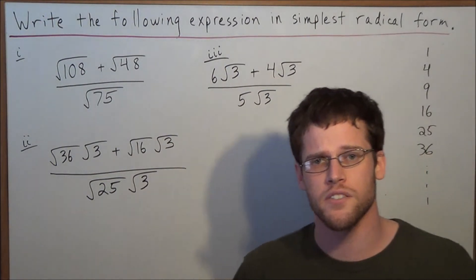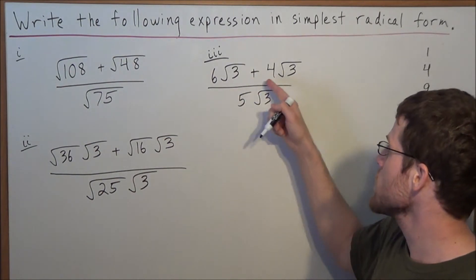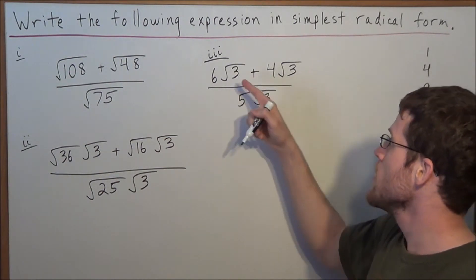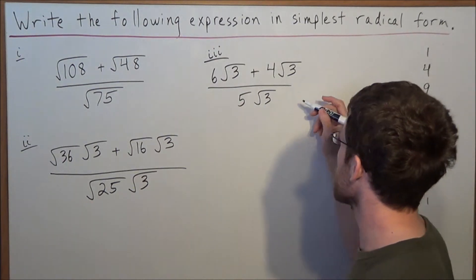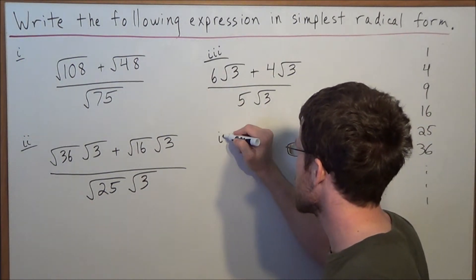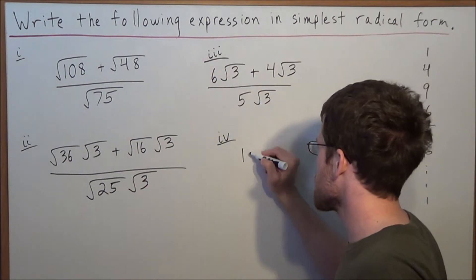Now this is where addition of radicals comes in. The fact that we have matching numbers under the radical tells us we could add these two radical expressions. All we're doing for the next line, we're doing 6 plus 4 is 10.